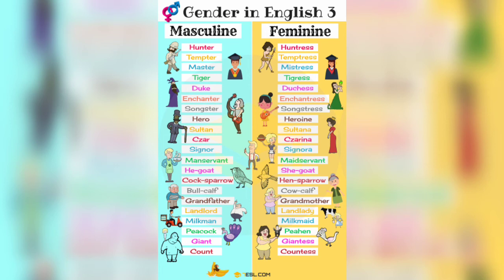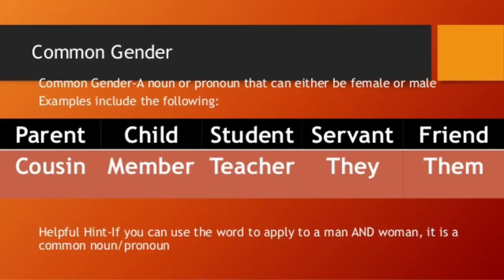Now let us move on to common gender. Common gender: a noun or pronoun that can either be female or male. It could be either male or female. For example, 'parent' — it could be your mother or father. 'Child,' 'student' — these are common gender words.